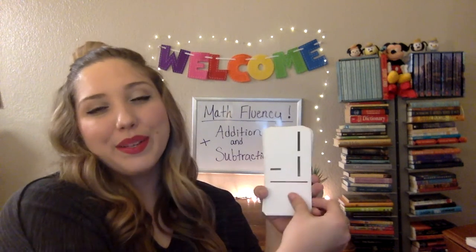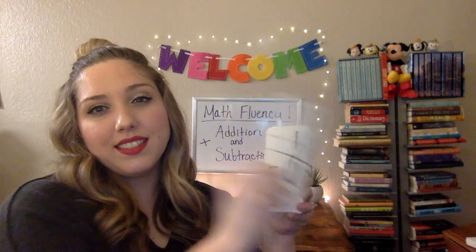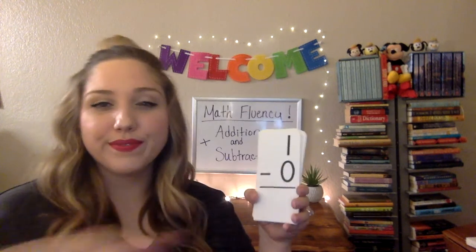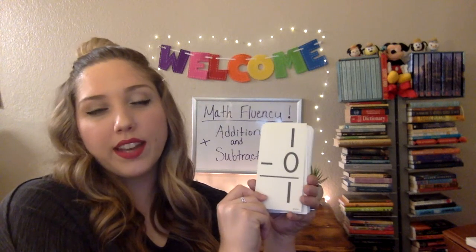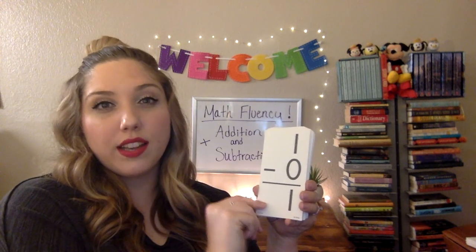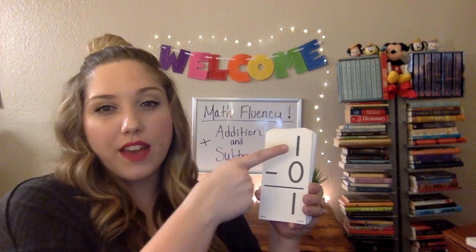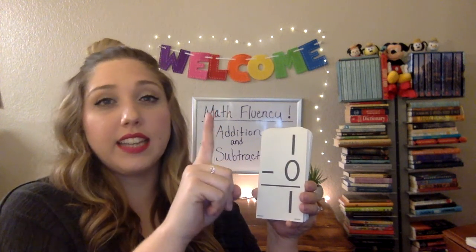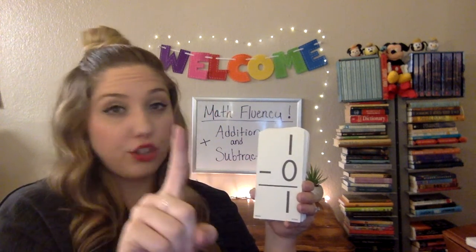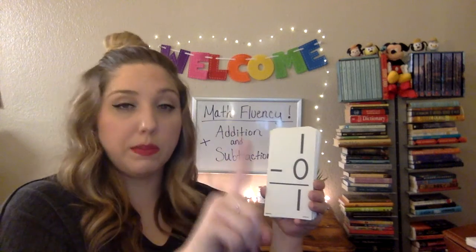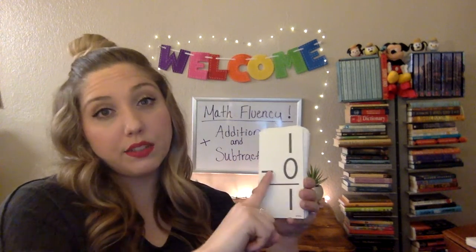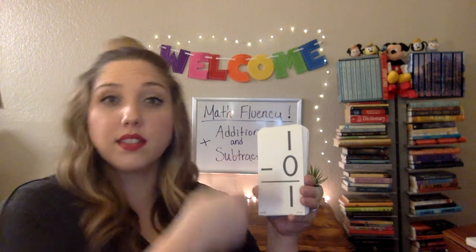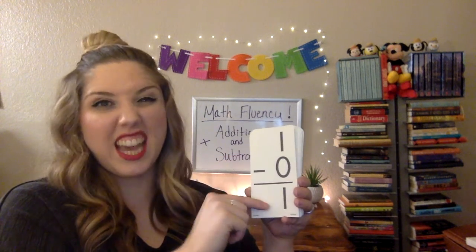0 minus 0 is 0 — that's an easy one! 1 minus 1 is 0. 1 minus 0 is 1. We talked about this in the addition fluency video: if I have 1 of something and I take 0 away, I haven't changed my number, so it is still going to be 1. Anytime you see a number minus 0, it's going to be that same number — we didn't take anything away.